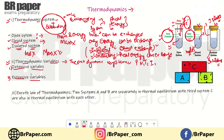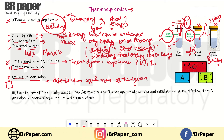There are two types of thermodynamic variables: intensive variables and extensive variables. Extensive variables are those that depend on the size and mass of the system. Examples of extensive variables include volume, internal energy, entropy, heat capacity, and enthalpy — these are all dependent on the size and mass of the system.